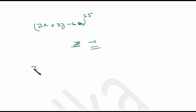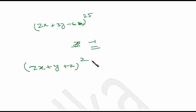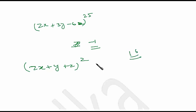Suppose I have (2x + y + z)². According to this rule, the sum of coefficients is (2 + 1 + 1)² = 4² = 16.